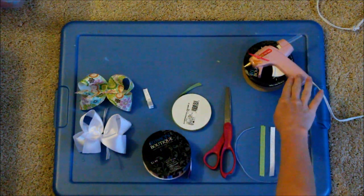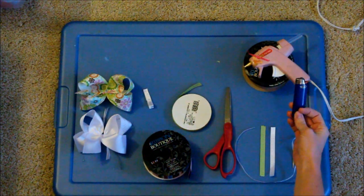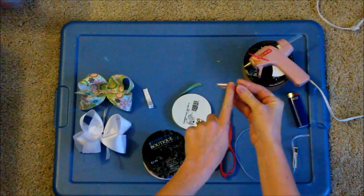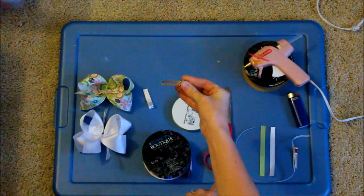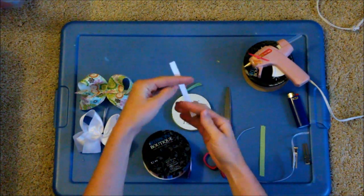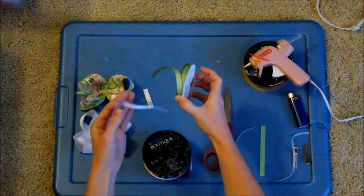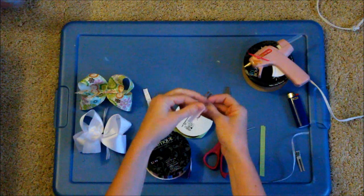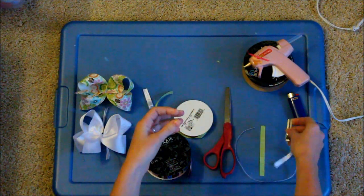What you will need is a hot glue gun, a lighter, your alligator clip, and this is what the bow is attached to and what goes in the little girl's hair. You will need 3/8 ribbon. That would be this ribbon right here. And this is actually going to cover your alligator clip so the bow can stick to it.